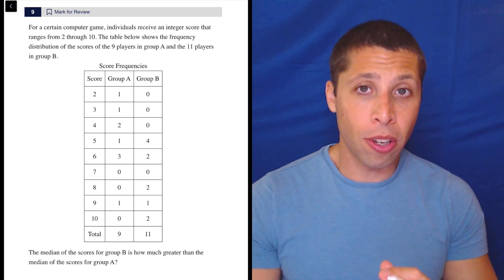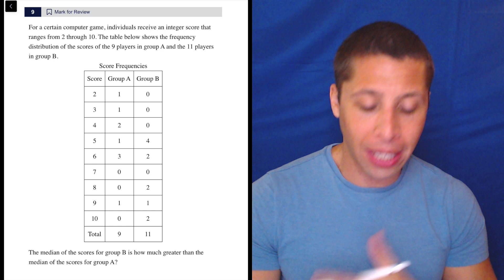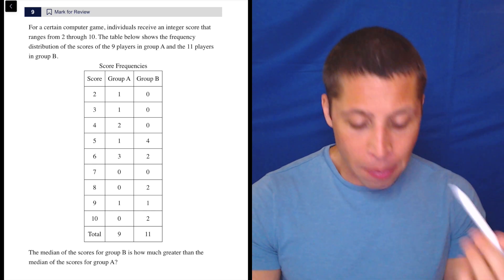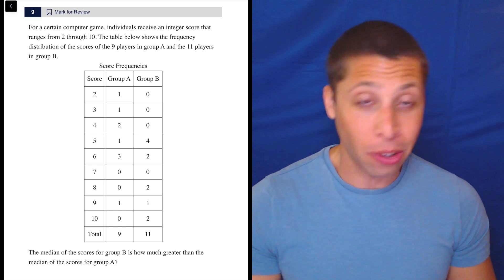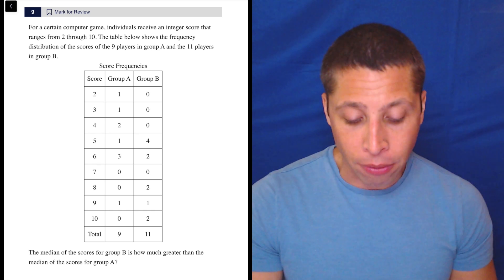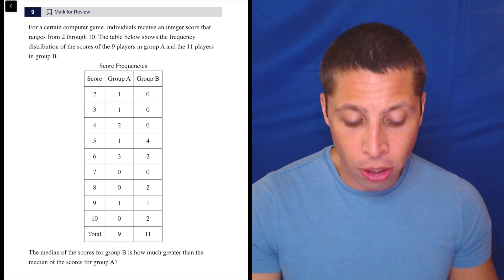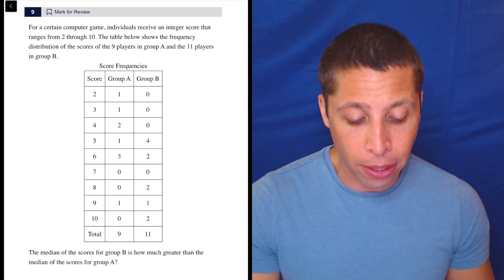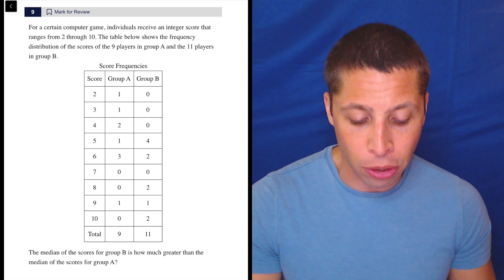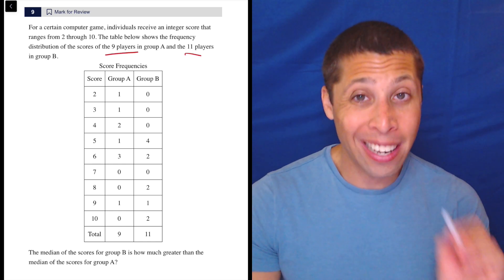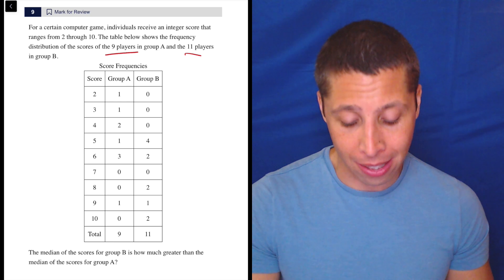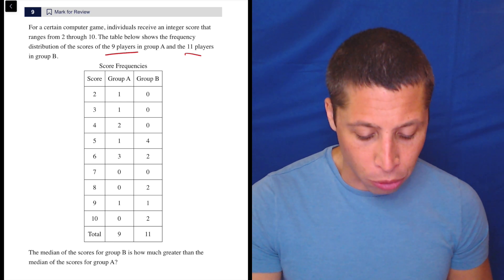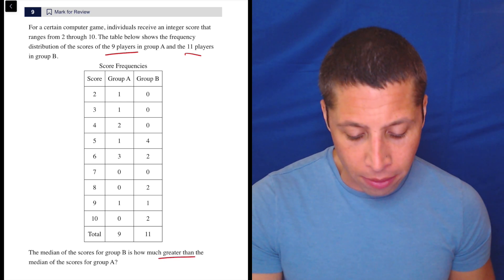There are two ways to do it. One is shorter, but I feel like people tend to mess it up. Let me explain and I'll show you the long way as well, which I don't think is that bad. For a certain computer game, individuals receive an integer score that ranges from 2 through 10. The table below shows the frequency distribution of the scores of the 9 players in group A and the 11 players in group B. Odd numbered sets are really good when we want medians. The median of the scores for group B is how much greater than the median of the scores for group A.